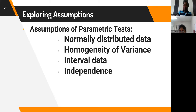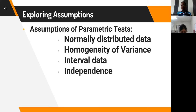Interval data means, for instance, the height of a person can be 170 or 171 centimeters, and between those we can have 170.1, 170.2 — that describes interval data. Typical examples include weight and temperature. Interval data is the kind of data we normally work with, except when working with categorical variables where we would use other means of analysis.